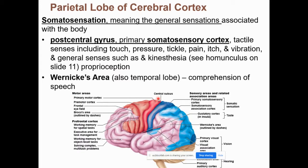In the parietal lobe, on the postcentral gyrus, that's your somatosensory cortex. All sensory information coming up to the brain from receptors in your skin — light touch, pressure, tickle, pain, itch — gets perceived on that postcentral gyrus. So in the frontal lobe it was all motor: primary motor cortex and Broca's area for speech muscles. In the parietal lobe it's sensory — information coming up to the brain via the somatosensory cortex.